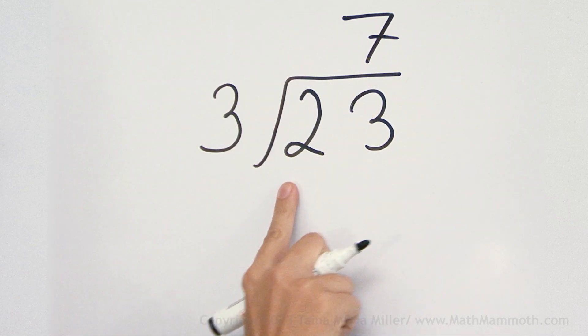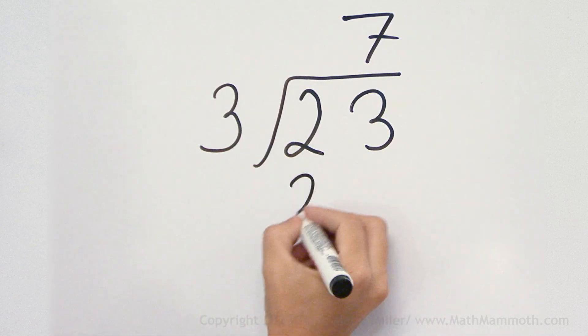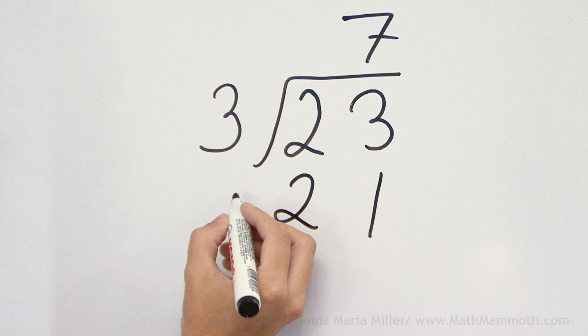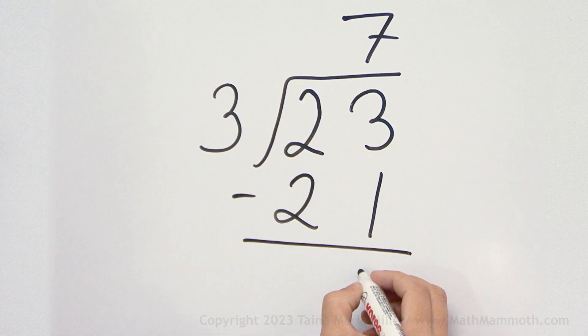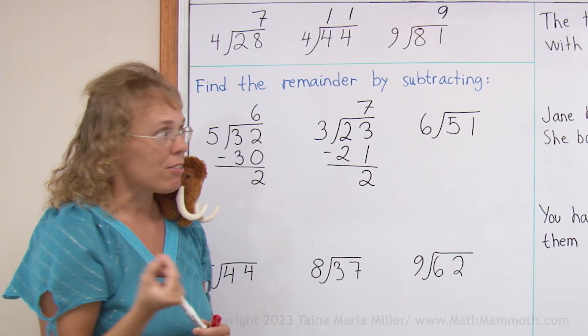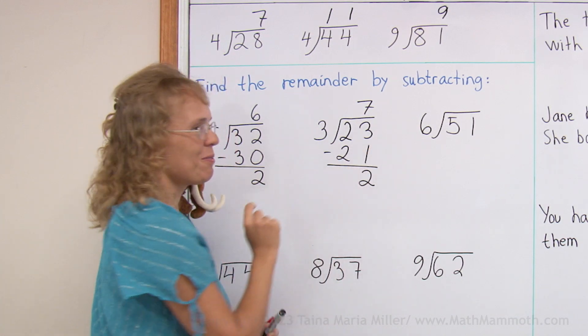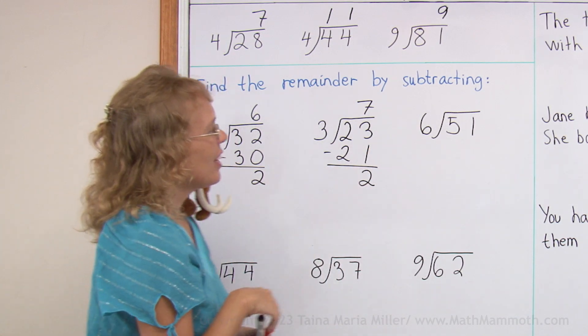There are 7 threes in 23. 7 times 3 is 21, like I said. And now we subtract to find the remainder, because the remainder was the difference of these two.